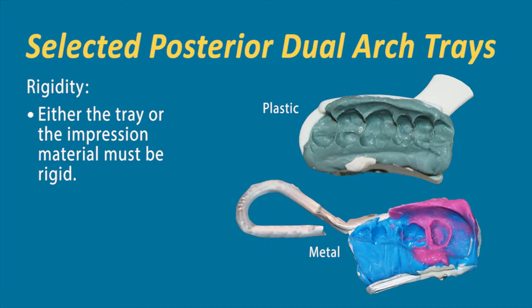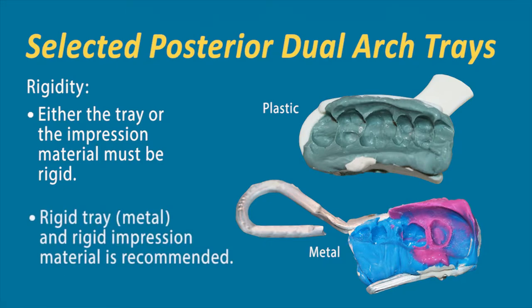When using a dual arch or triple tray, two things to keep in mind: first, selection of the tray—we recommend a metal triple tray or dual arch tray. One of my favorites is made by Clinician's Choice; it's an aluminum tray, which is a very good rigid material to support the impression material. Second, match that tray with a good high-quality impression material that has good rigidity and stiffness. As a recap: a metal triple tray with a rigid impression material gives you a really good choice for success when using a dual arch or triple tray.